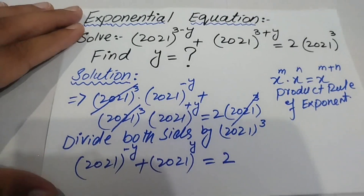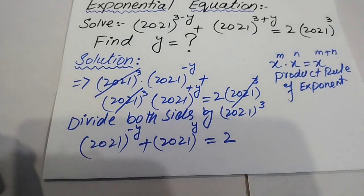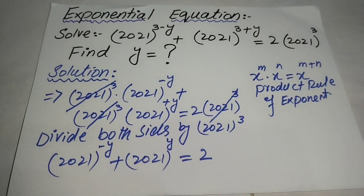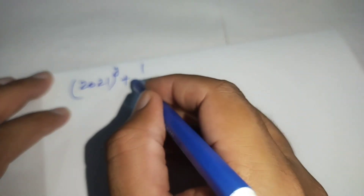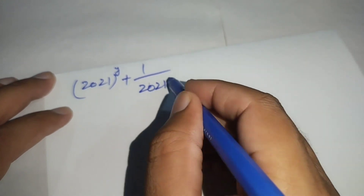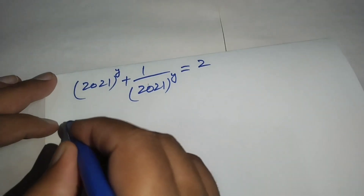In simplified form, we write 2021^(-y) + 2021^y = 2. We can also rewrite 2021^(-y) as 1 / 2021^y, giving us 2021^y + 1 / 2021^y = 2.